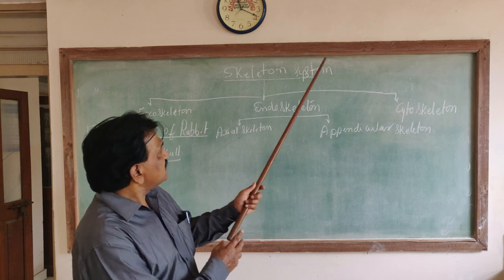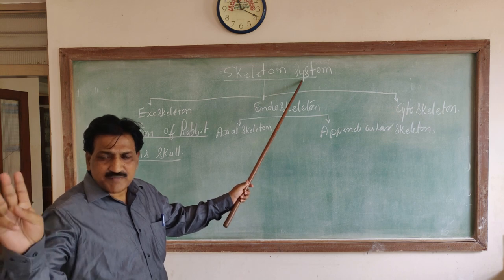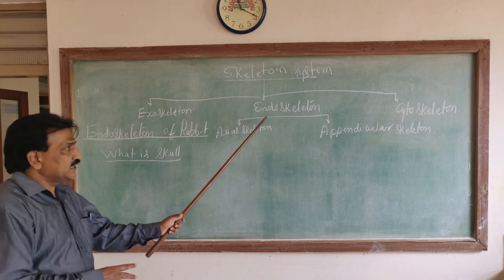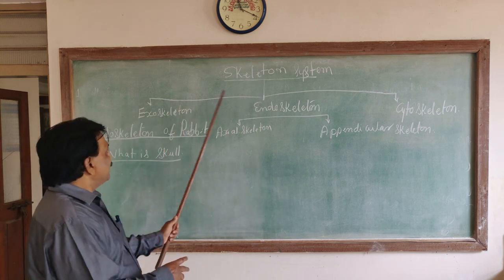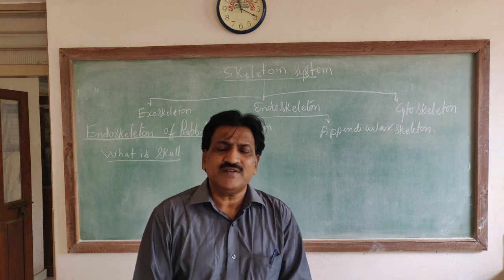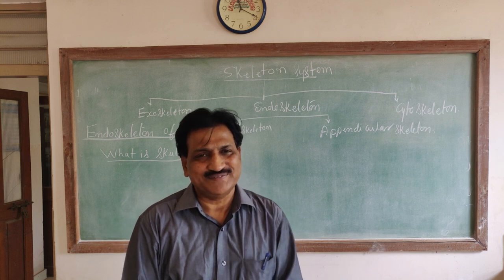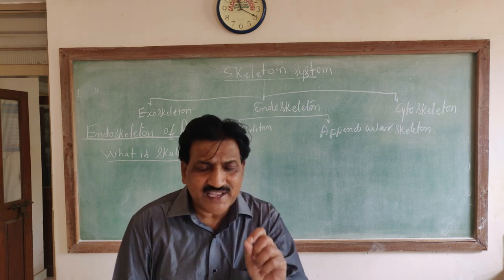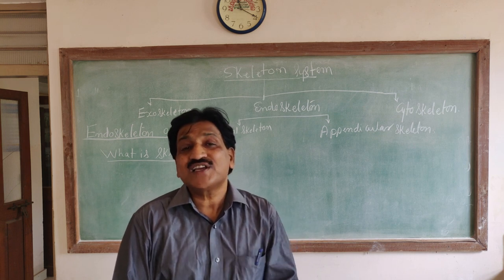The skeletal system has three types: exoskeleton, endoskeleton, and cytoskeleton. The exoskeleton is present outside the body. A best example in case of invertebrates, particularly in arthropoda, having exoskeleton that is called chitin.